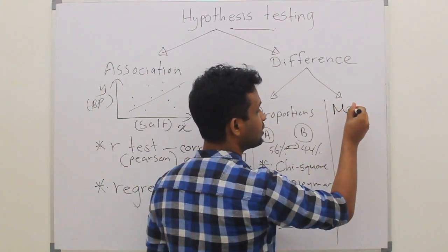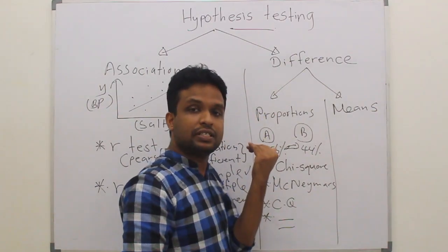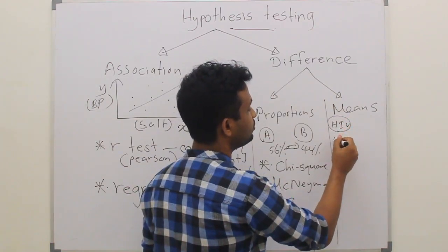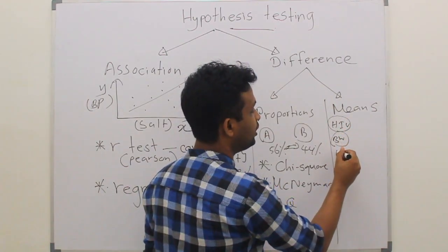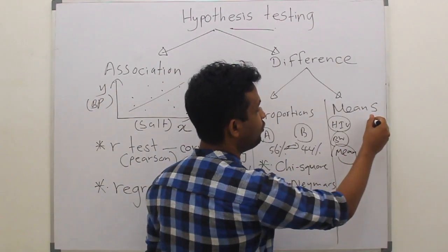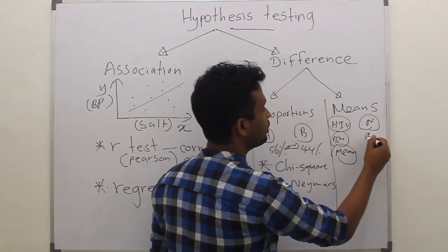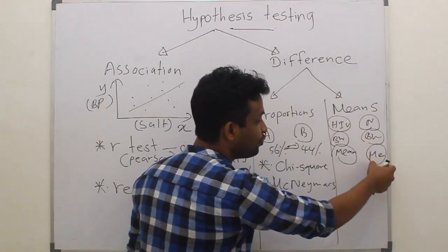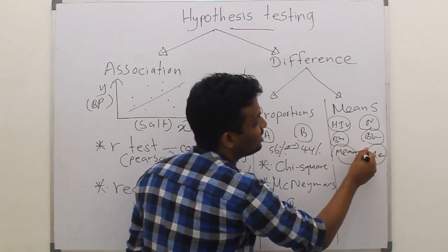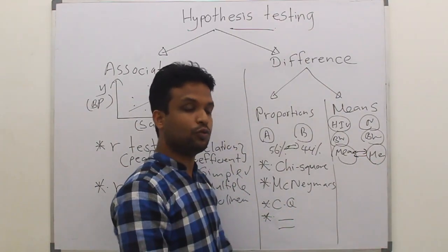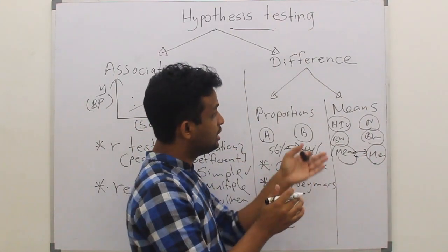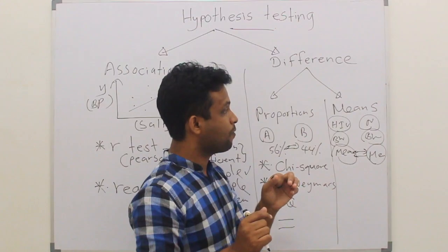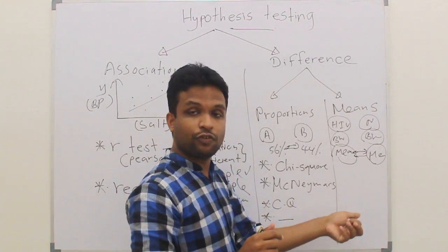The other type of difference is the difference between means. We discussed this in the previous lecture. Whether the mean birth weight of HIV group birth weight mean is different from normal birth weight mean. You can calculate the mean of this group and the mean of this group and you can test whether there is a significant difference between the two means. We call that hypothesis of difference, means.